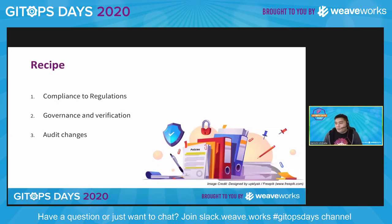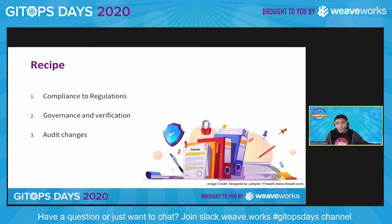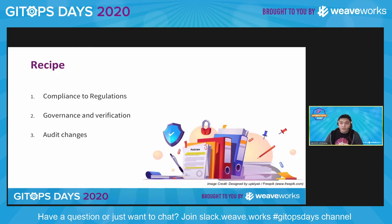Let's tackle this. When you have challenges, you have a set of recipes to achieve them. Three recipes are identified here. First, compliance to regulation — that means external regulations like PCI DSS, CIS compliance, NIST compliance, some external regulating body. Second is governance, which is internal to your company: what your board says, your SLA, your SLO, vulnerability management process, incident management process, lifecycle management, deployment process, and so on. Third, how do you audit these changes.